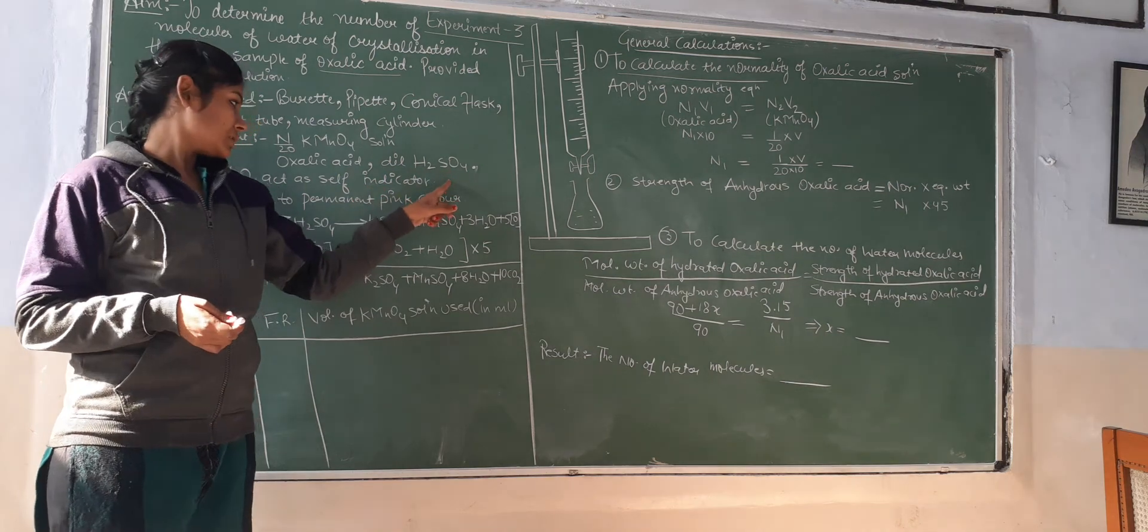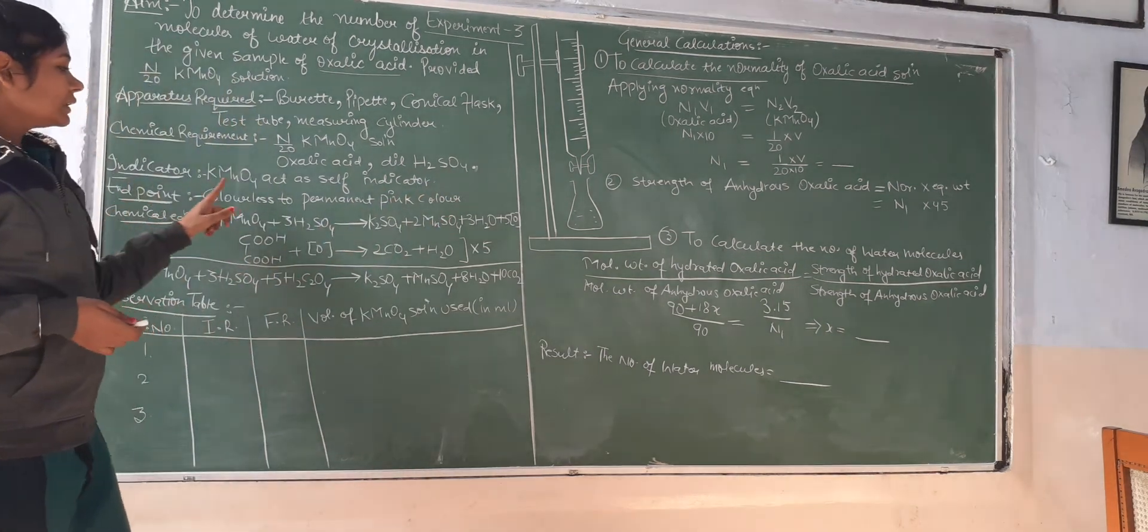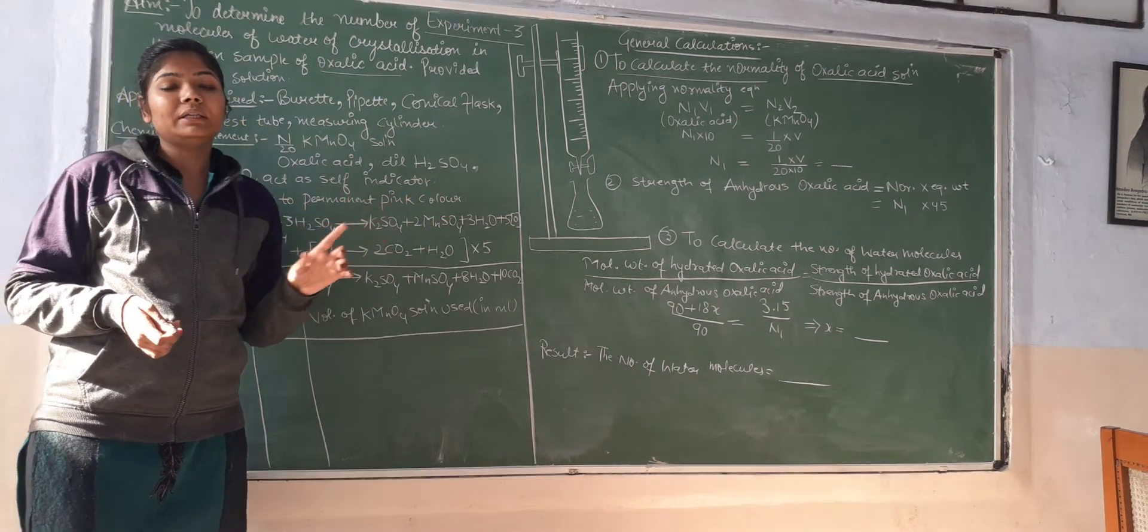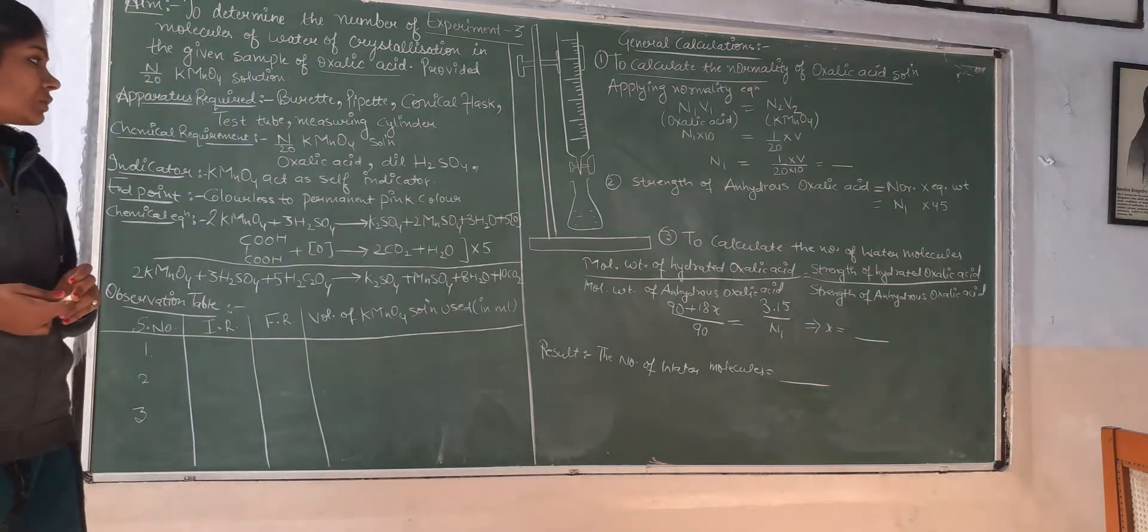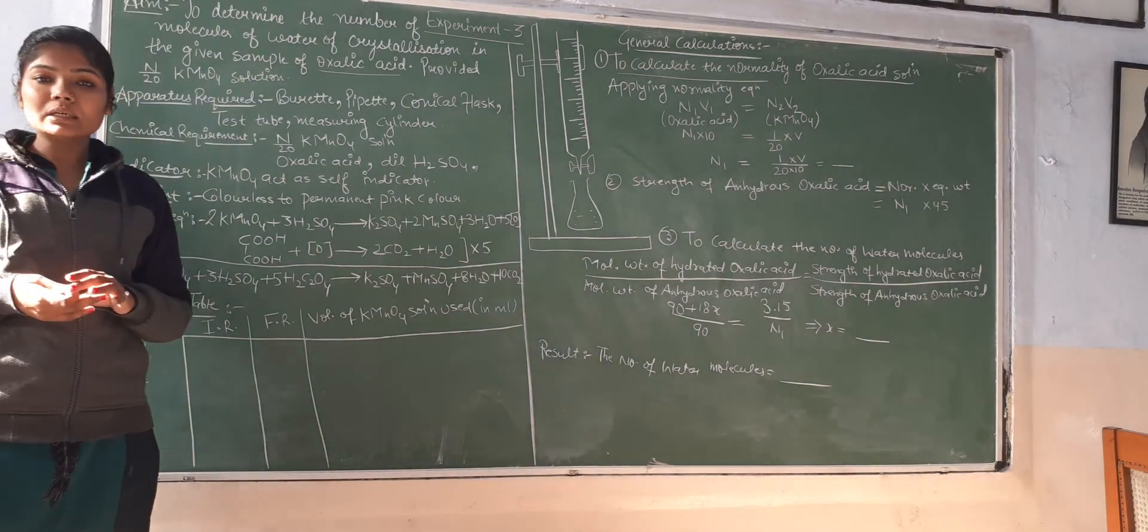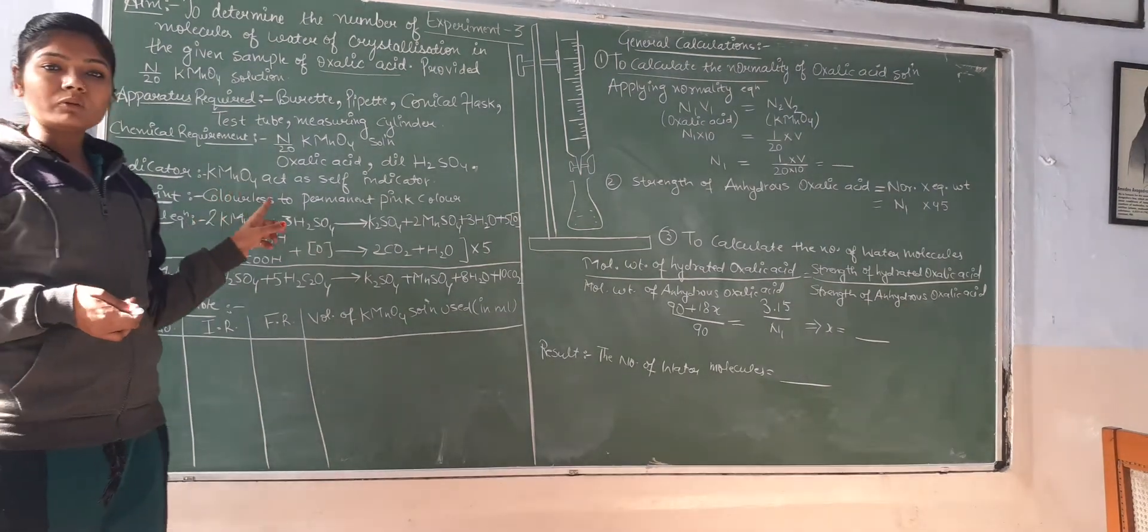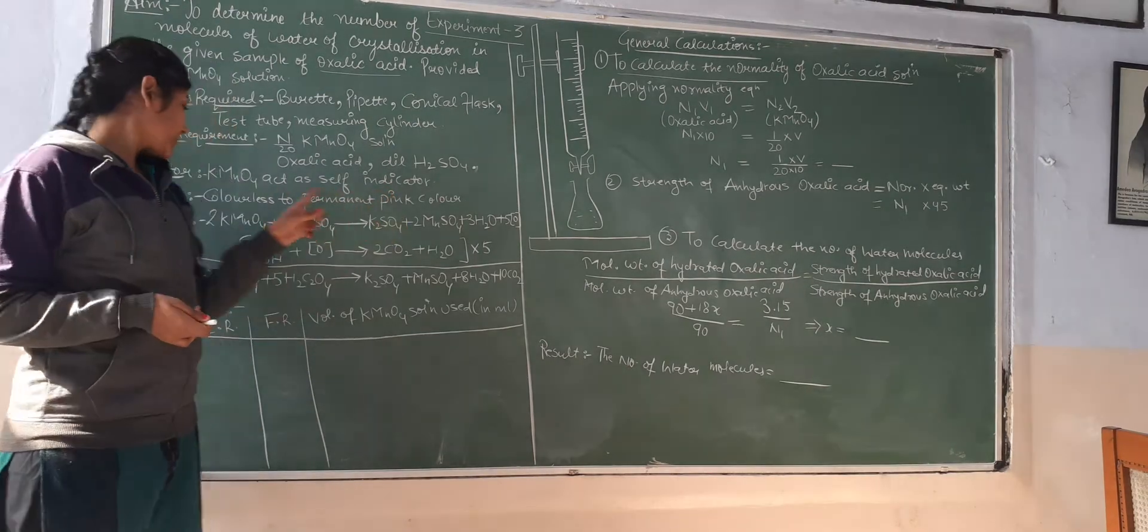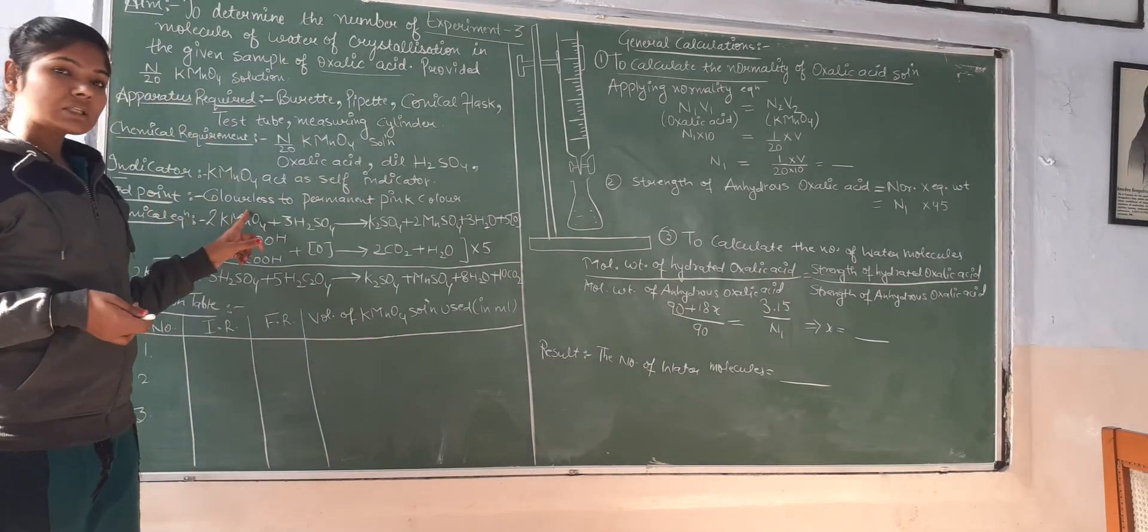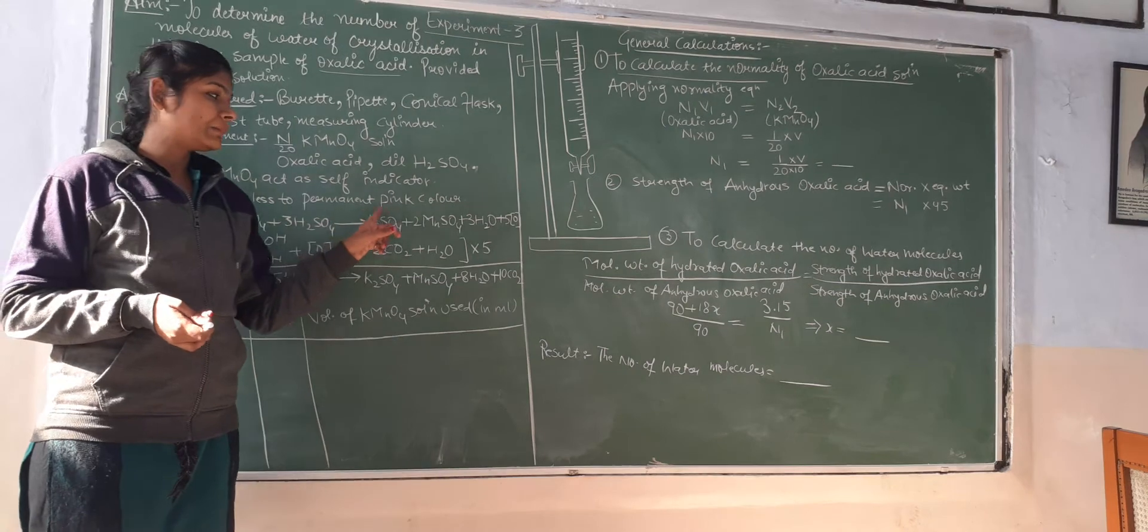Chemical requirements are 1 by 20 normal KMnO4 solution, oxalic acid, and dilute sulfuric acid. For indicator, KMnO4 acts as self-indicator. In the previous titration, we had a different indicator, but we don't have an extra indicator requirement because KMnO4 will act as self-indicator.